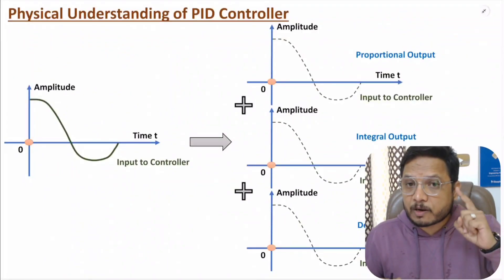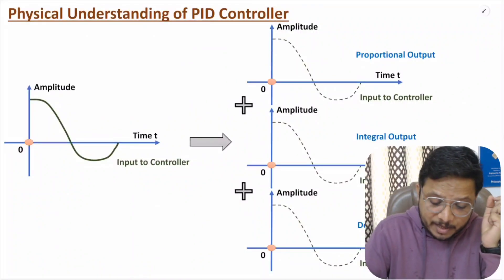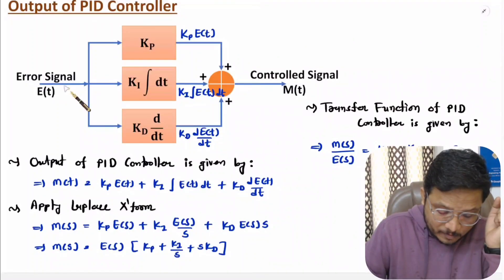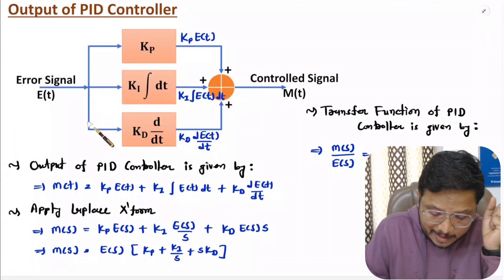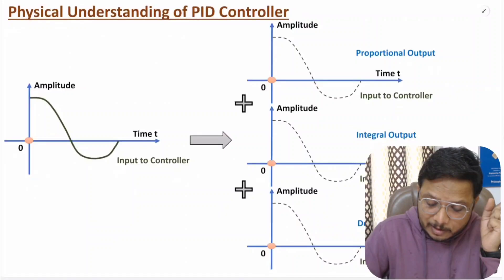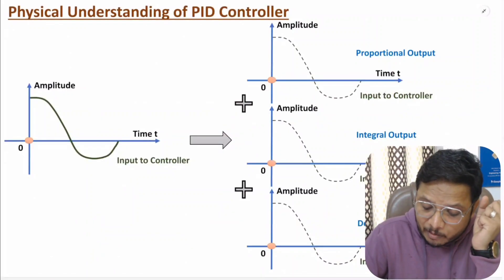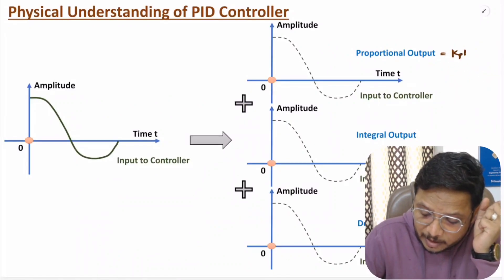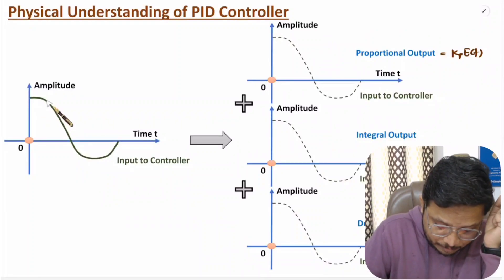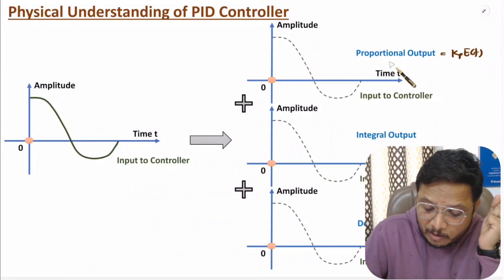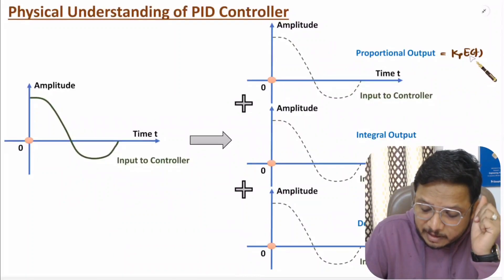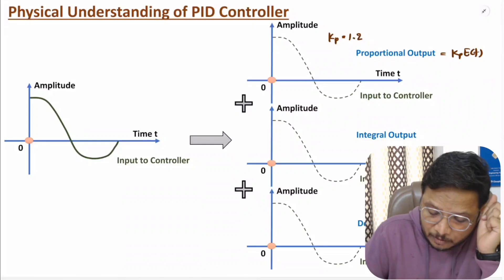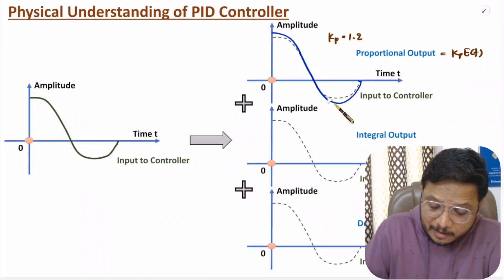Now I will explain the physical understanding of the PID controller. The input signal to the controller is the error signal E(t). This input is given to the proportional, integral, and derivative controllers. With the proportional controller, the output is simply K_P into E(t). The shape of the output remains the same as the input — you are only multiplying by the constant K_P. If K_P is 1.2, the output shape is similar to the input shape.